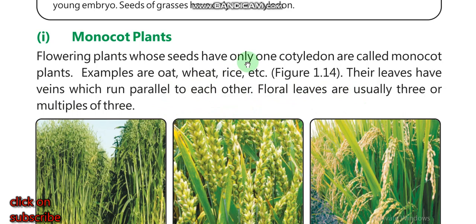In monocot plants, if you look at the seeds, there is only one cotyledon. The floral leaves are usually three or multiples of three.